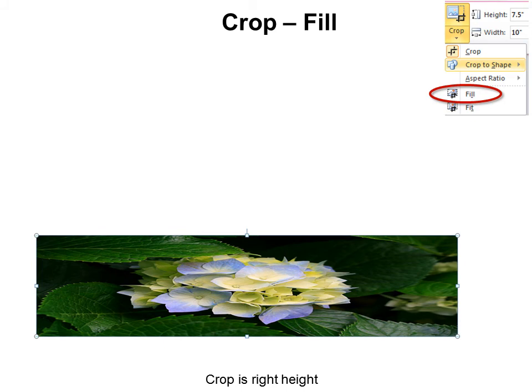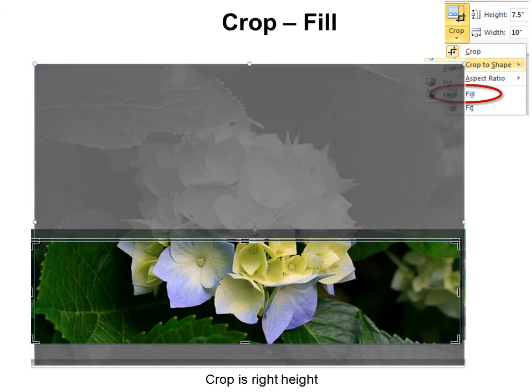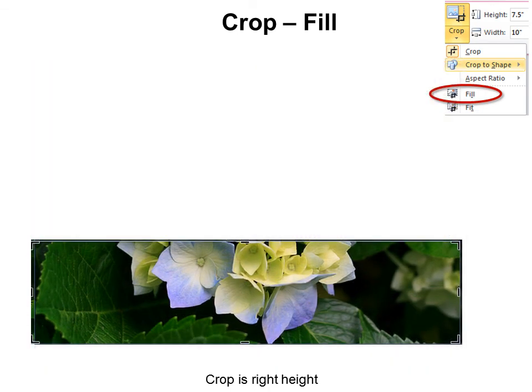Now on the drop-down, you have the option for Crop Fill. That means that now my Crop tool will turn into the correct height, and I can crop it down. Just by clicking, it will automatically make it the right height. Again, I can hit the Crop button and reposition the hydrangeas within that area.